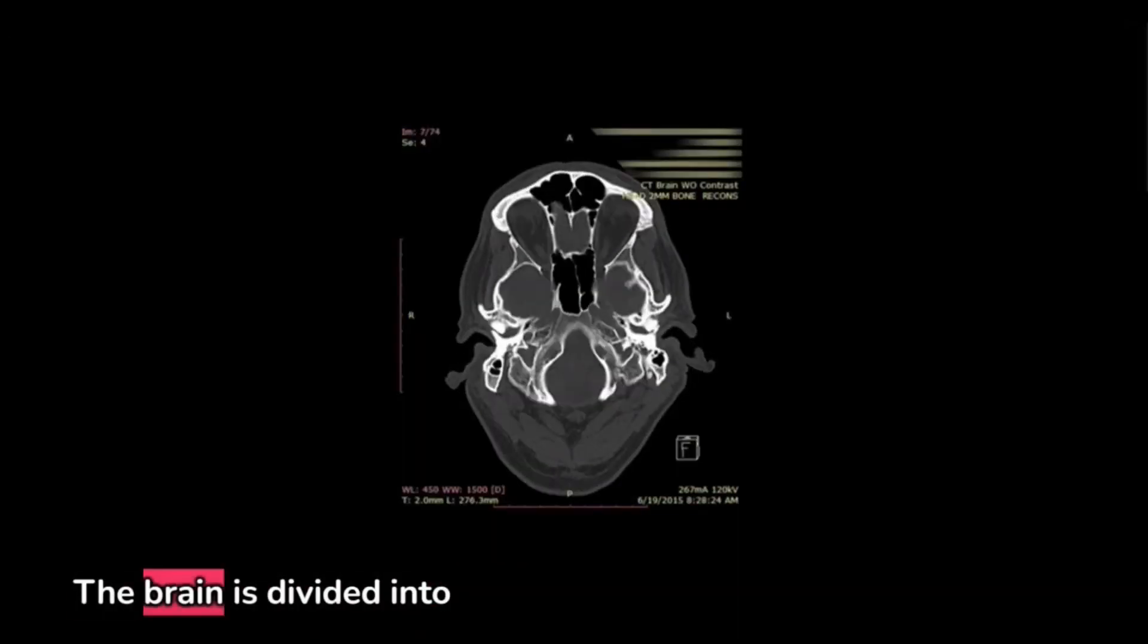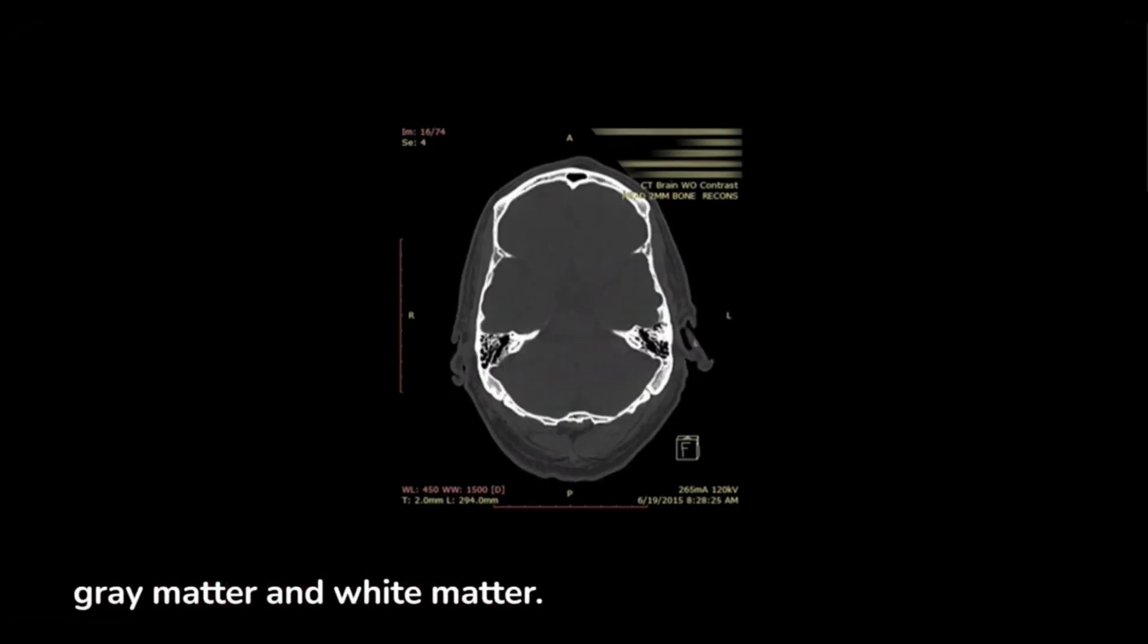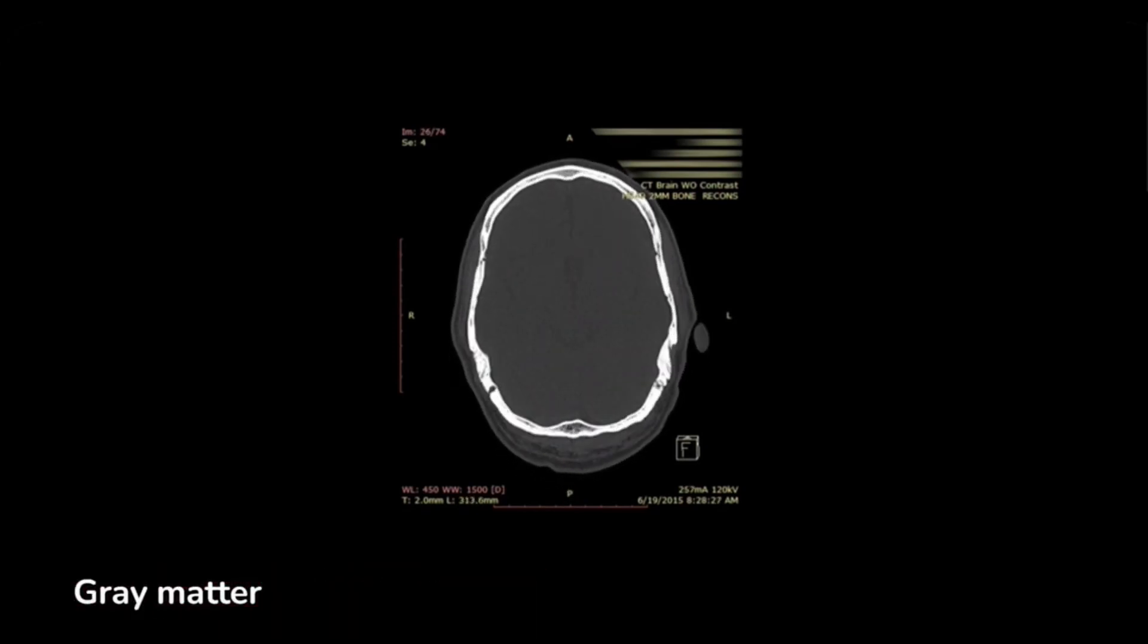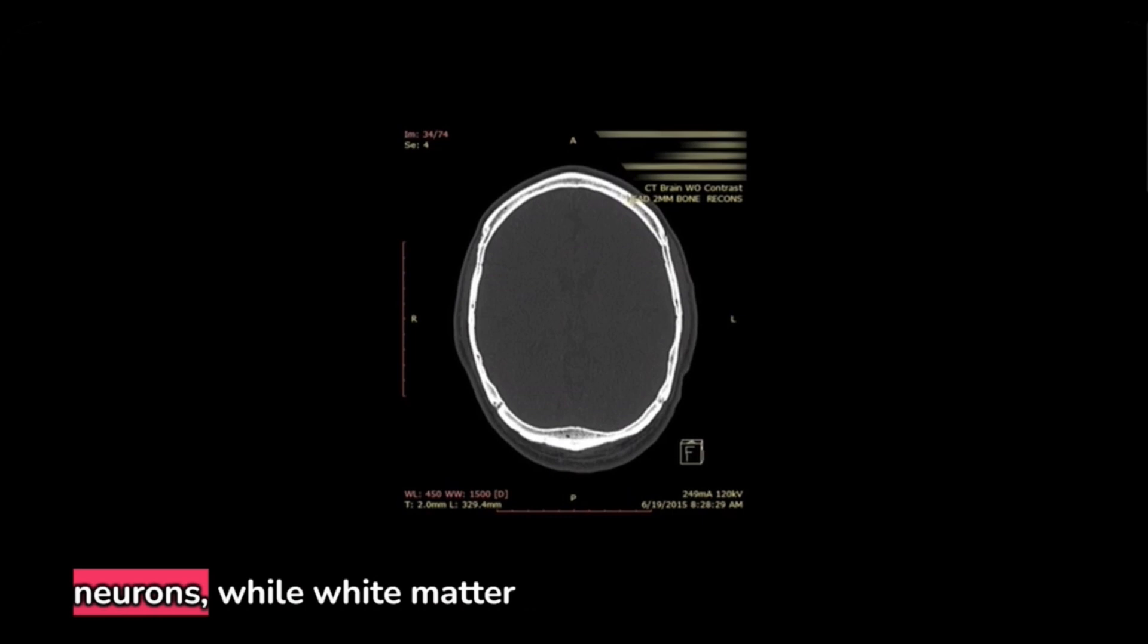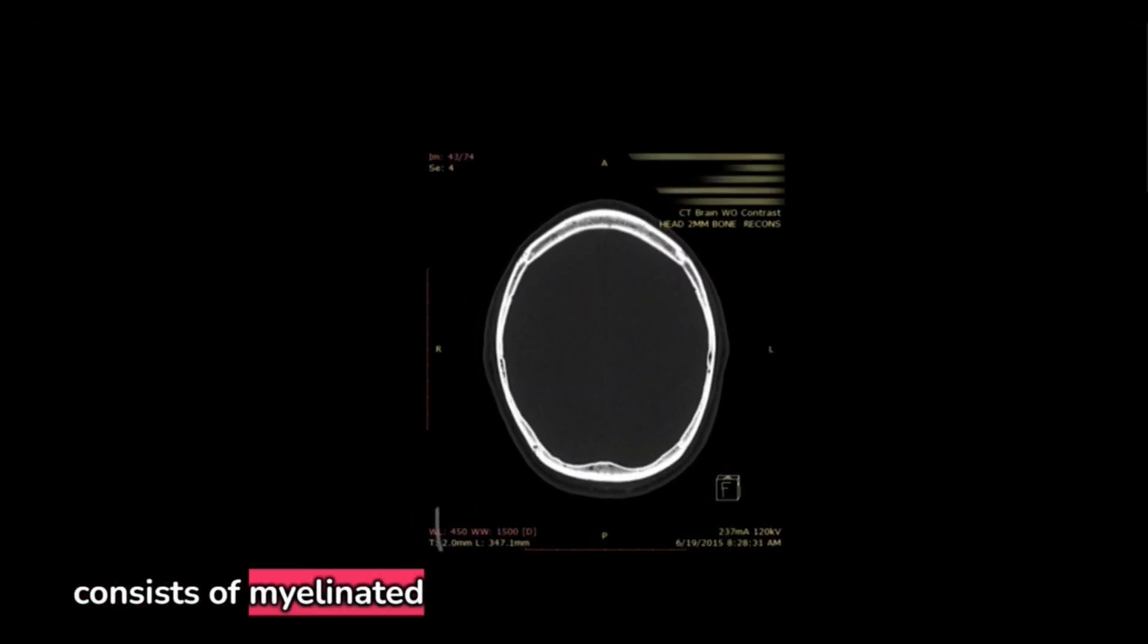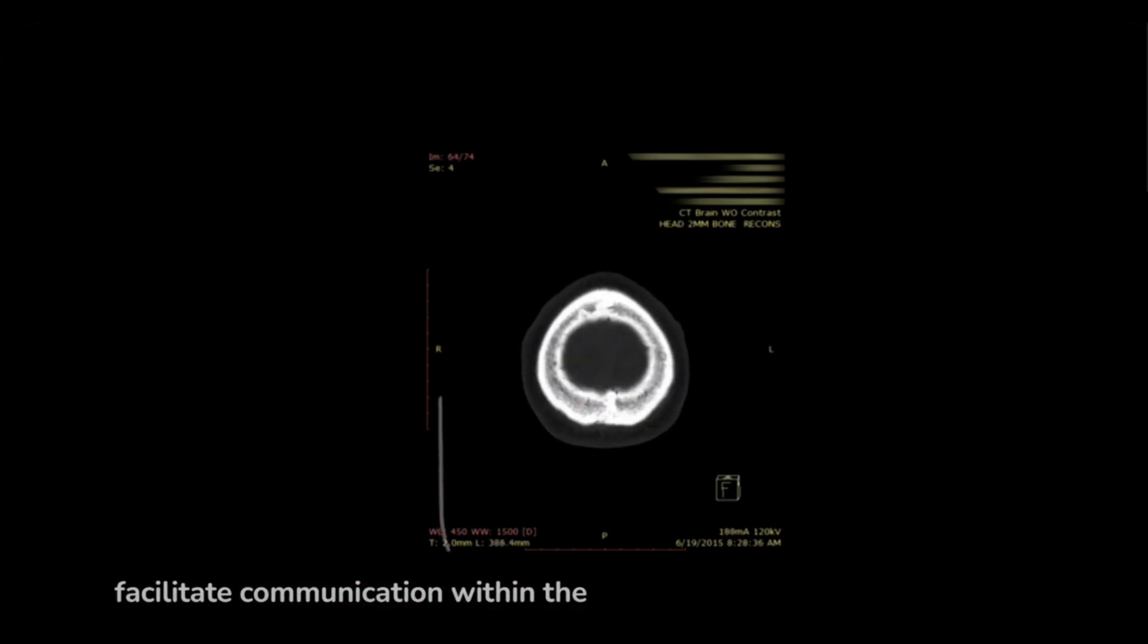The brain is divided into gray matter and white matter. Gray matter contains the cell bodies of neurons, while white matter consists of myelinated axons. The two work together to facilitate communication within the brain.